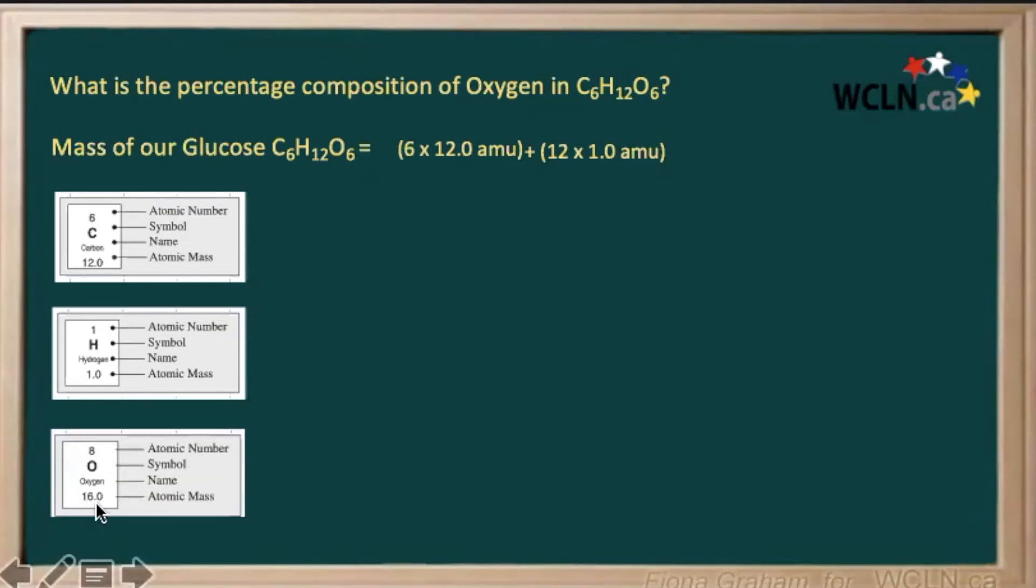Our oxygen has an atomic mass of 16, and we have 6 oxygen, so we will add that on to get a total of 180 atomic mass units for our whole compound.